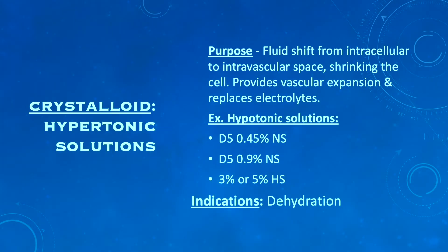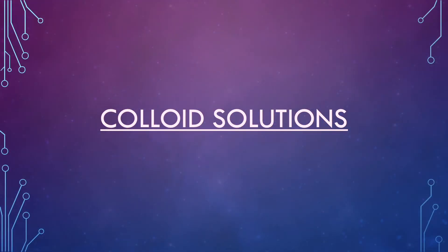Hypertonic solutions draw fluid out of cells into the intravascular space, shrinking the cells and allowing for vascular expansion. Examples include D5 0.45 normal saline, D5 0.9 normal saline, and hypertonic saline at 3% or 5%. They are used for dehydration. Complications if not monitored include electrolyte imbalance, hypervolemia, and edema.